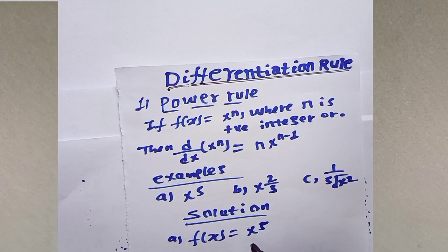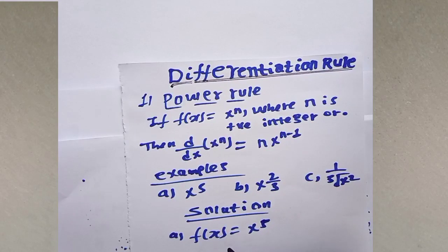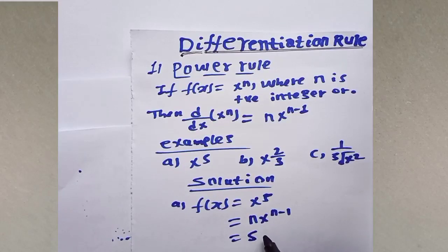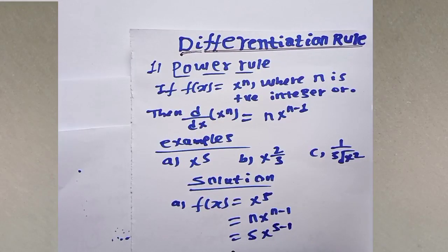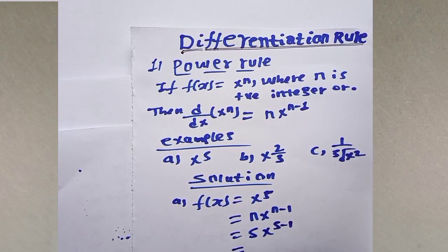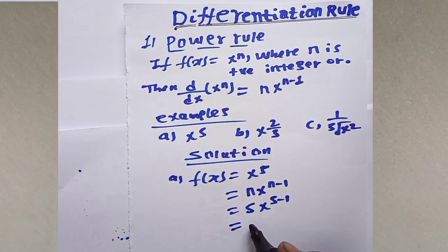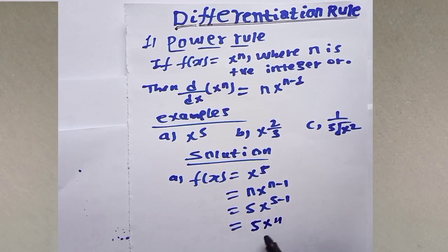Now differentiate this function. In this function n is going to be 5. So according to the power rule, which is n times x to the power of n minus 1, the derivative of f of x equals x to the power of 5 is equal to 5 times x to the power of 5 minus 1, which equals 5 times x to the power of 4.